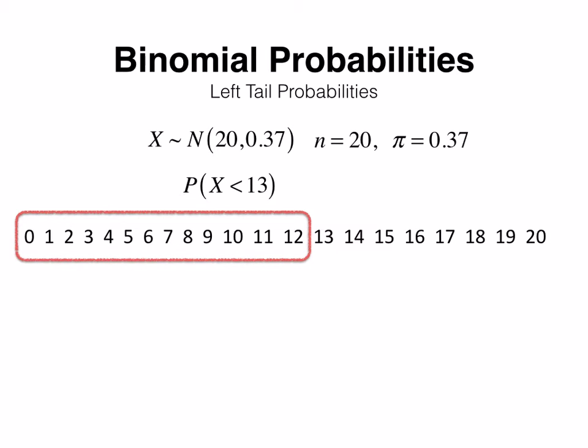Well less than 13 is 12 or fewer. So this is exactly the same thing as saying probability X is less than or equal to 12.